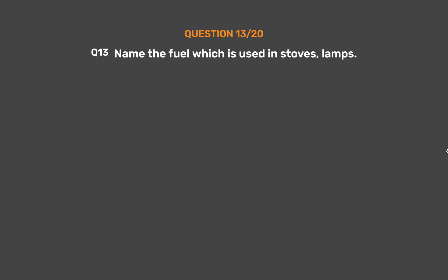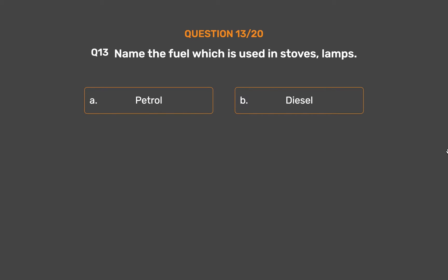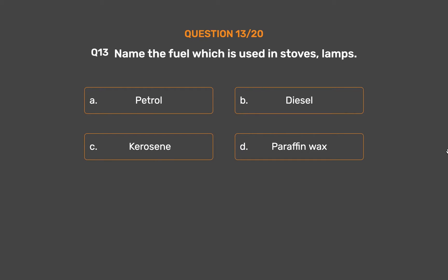Question number 13: Name the fuel which is used in stoves and lamps. Option A: Petrol. Option B: Diesel. Option C: Kerosene. Option D: Paraffin wax.